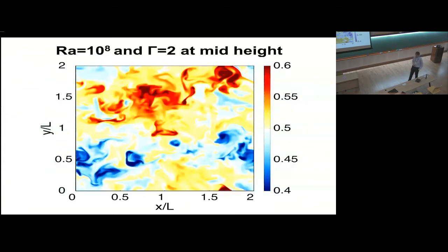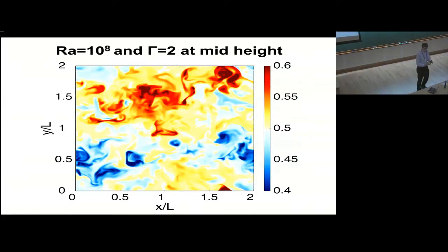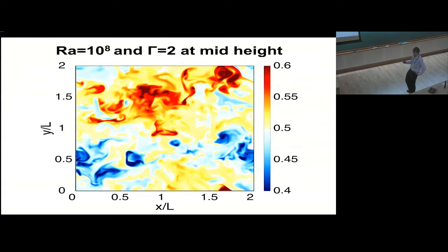Looking at the simulation results at Rayleigh 10⁸ with the Rayleigh number fixed, we look at the temperature field at mid-height for aspect ratio 2. What you can see in this figure is that there is one region where the warm fluid is going up — this red blob — and one region where the cold fluid is going down — this blue blob. So there is basically just one large-scale flow structure in this domain.